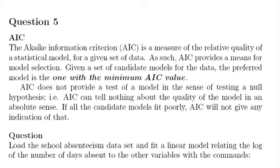This is an old Coursera question relating to stepwise variable selection procedures. First off, what I'm going to talk about is the AIC — the Akaike Information Criterion — which is a measure of the relative quality of a statistical model for a given set of data. Essentially, it provides a means for model selection, comparing one potential model versus another. Given a set of candidate models, the preferred model is the one with the lowest or minimum AIC value.